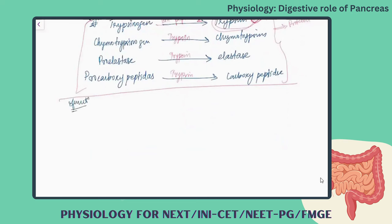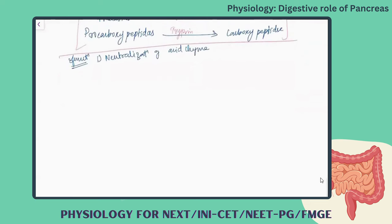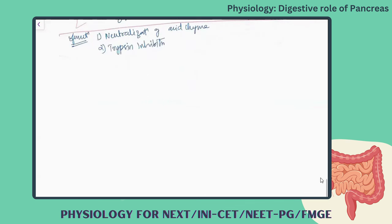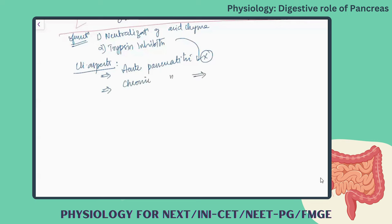The main functions of pancreatic juice are: first, neutralization of the acid chyme — the bicarbonate-rich alkaline juice neutralizes the acidic chyme entering the duodenum. Second, the trypsin inhibitor prevents the autodigestion of the pancreatic tissue.